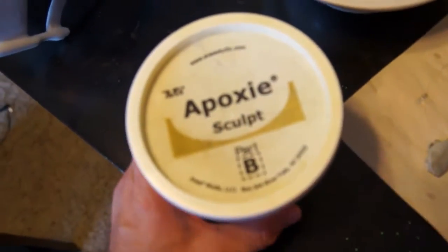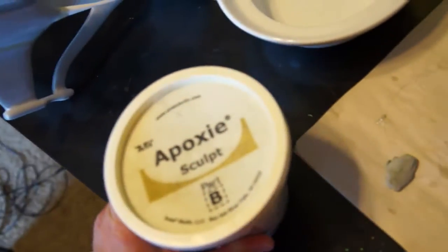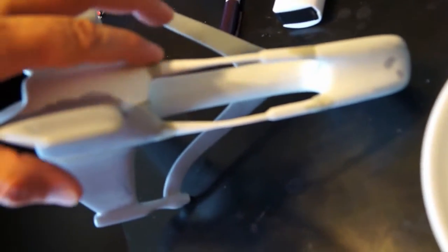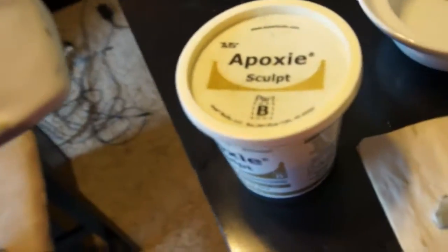Alright everyone, this is something you haven't seen in a while on my channel - good old Aves Epoxy Sculpt. I got it out because the joints here were pretty horrible, and I used it and smoothed it and put it in there.